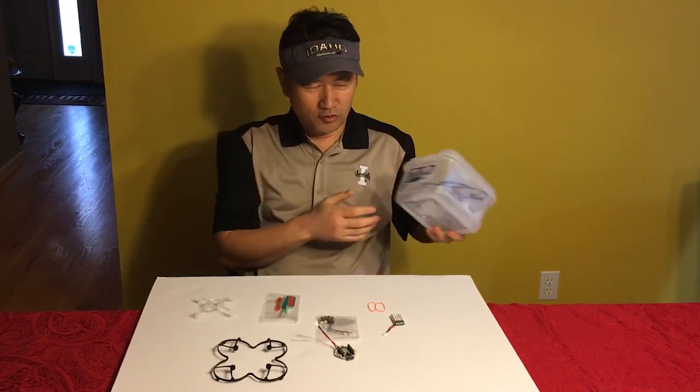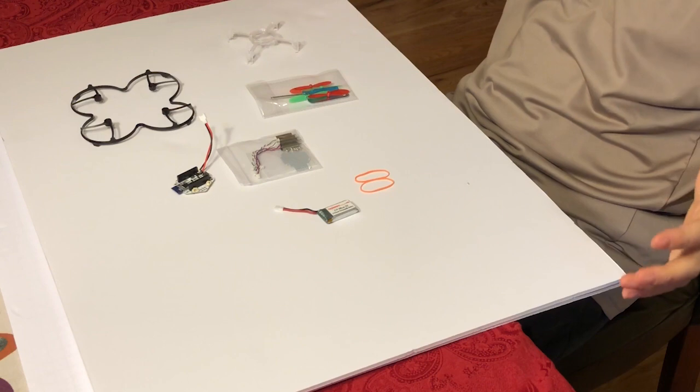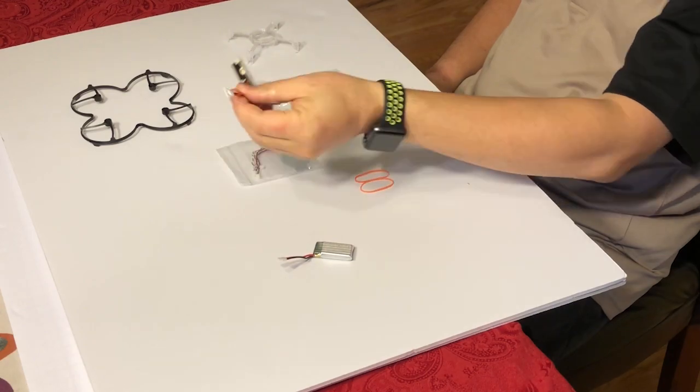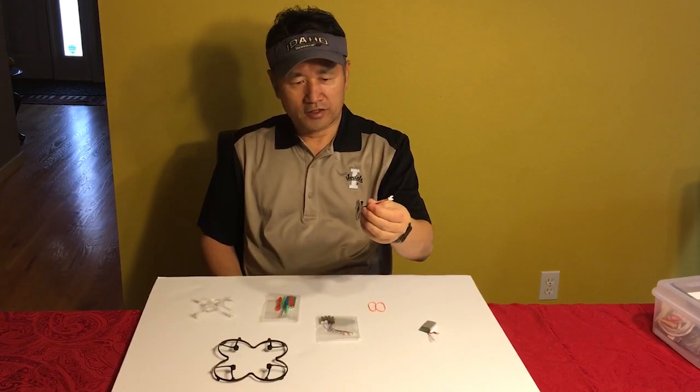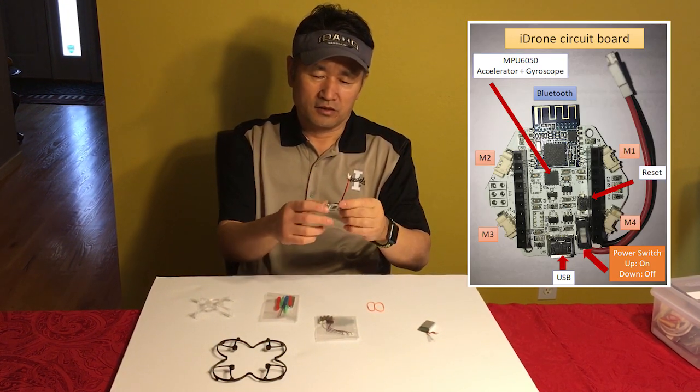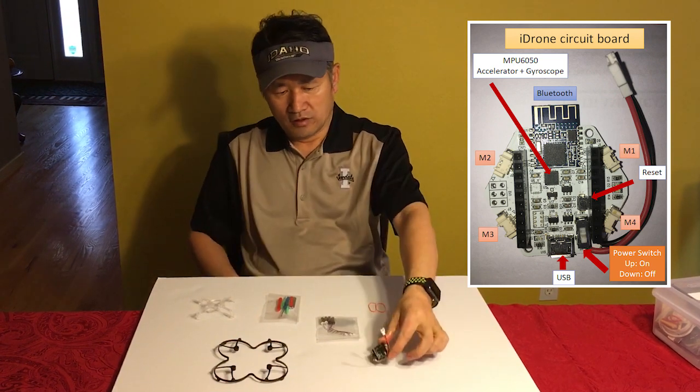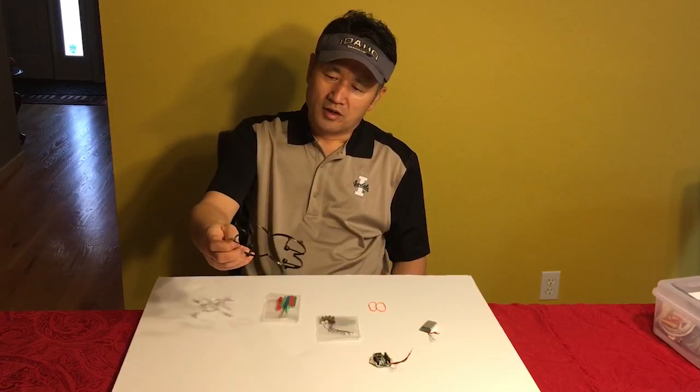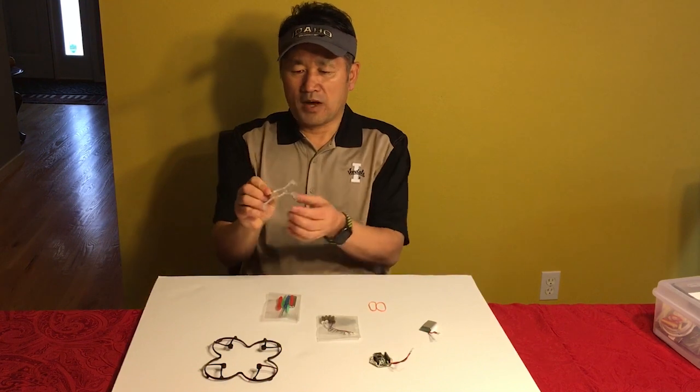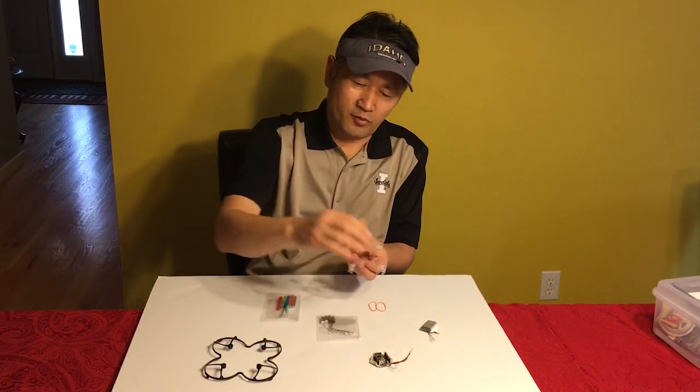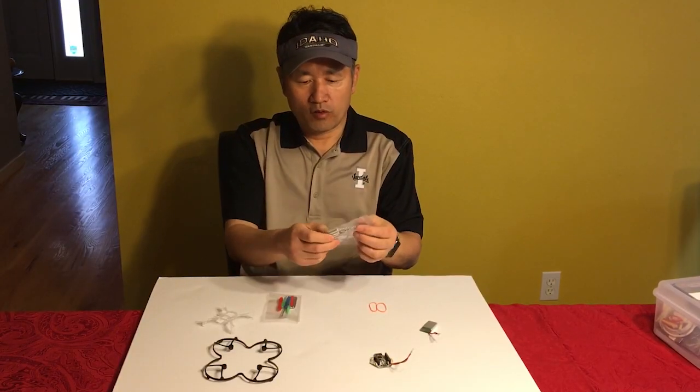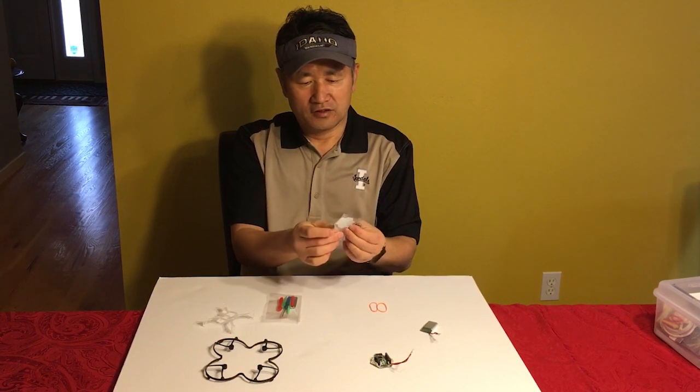In the box you have several different components. Let me explain a little bit about these components. The battery was in it, and this circuit board. Actually it's a very small chip made of Arduino, an Arduino system. And also we have a propeller guard right here and this is a body frame.